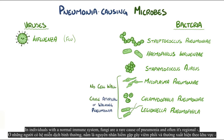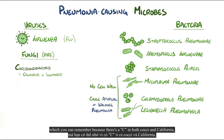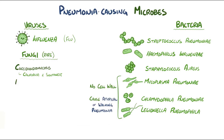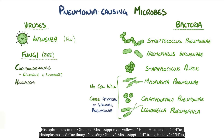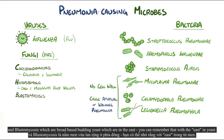In individuals with a normal immune system, fungi are a rare cause of pneumonia, and often it's regional. For example, there's coccidioidomycosis in California and the southwest — you can remember because there's a C in both Cocci and California — histoplasmosis in Ohio and the Mississippi river valleys, H in histo and H in Ohio, and blastomycosis, which are broad-based budding yeast in the east.